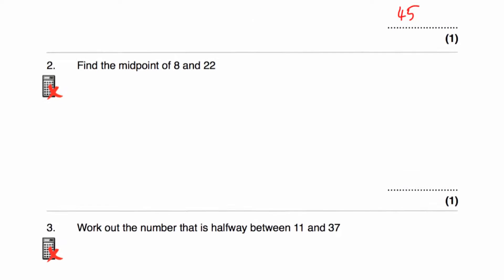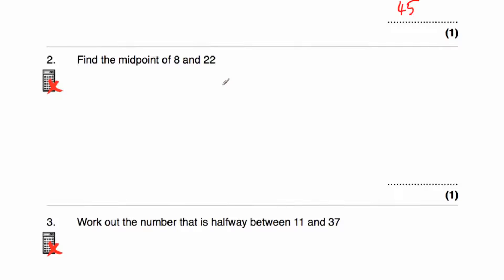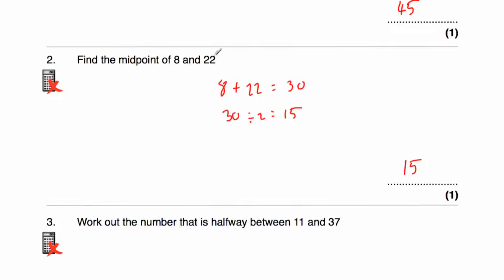Question two says: find the midpoint of 8 and 22. So 8 plus 22 is equal to 30, and then 30 divided by 2 is equal to 15. So the midpoint of 8 and 22 is 15. We can check it: if we add 7 we get to 15, and if we add another 7 we get to 22.